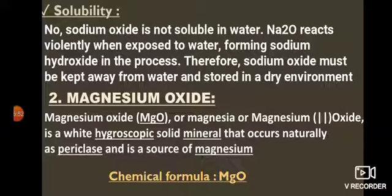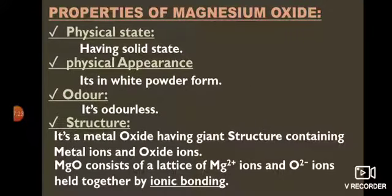Oxide number 2: magnesium oxide, MgO. It is also called magnesia or magnesium 2 oxide. It is a white, hygroscopic solid mineral that occurs naturally as periclase — the mineral which contains magnesium oxide — and is a source of magnesium. The chemical formula is MgO. Physical state: solid; appearance: white powdered form, odorless. Its structure is a giant ionic structure consisting of a lattice of Mg²⁺ ions and O²⁻ ions held together by ionic bonding, with some covalent character also present.